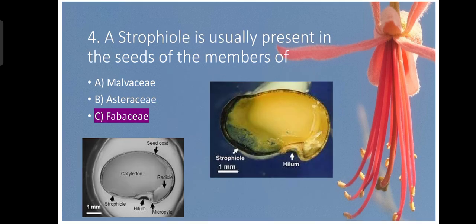Question number four. Astrophiol is usually present in the seeds of the members of Fabaceae. This is the characteristic of the Fabaceae seeds. In some plants Astrophiol which is a scar-like structure, crescent-like structure found in some members of the Fabaceae plants.